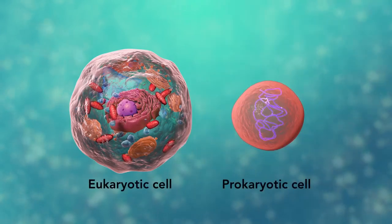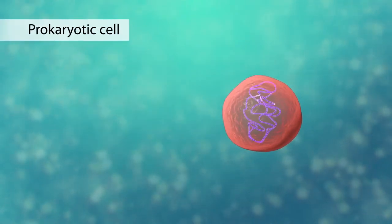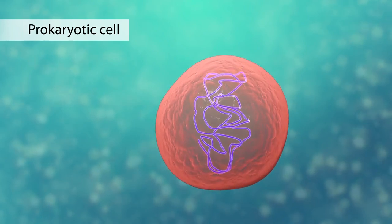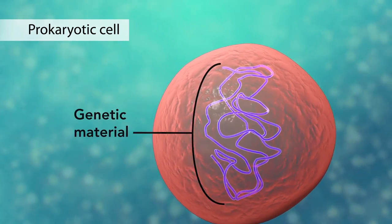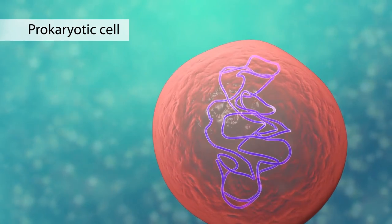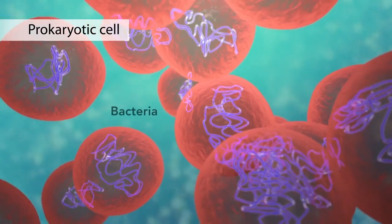The second category is prokaryotic cells. They don't have a nucleus or membrane enclosed organelles. They do have genetic material but it's not contained within a nucleus. Prokaryotic cells are always one-celled or unicellular organisms such as bacteria.